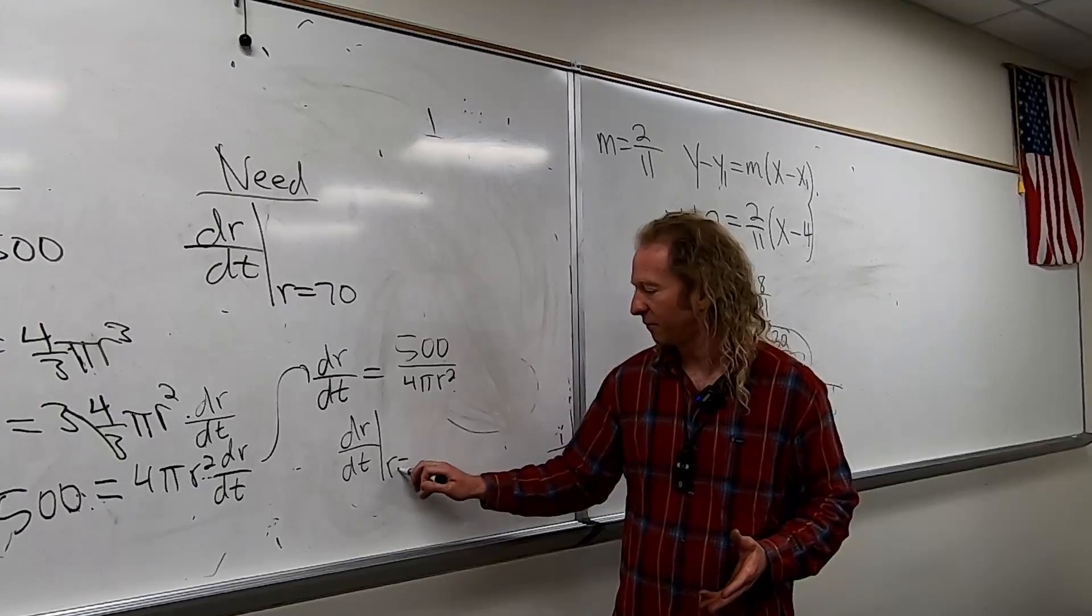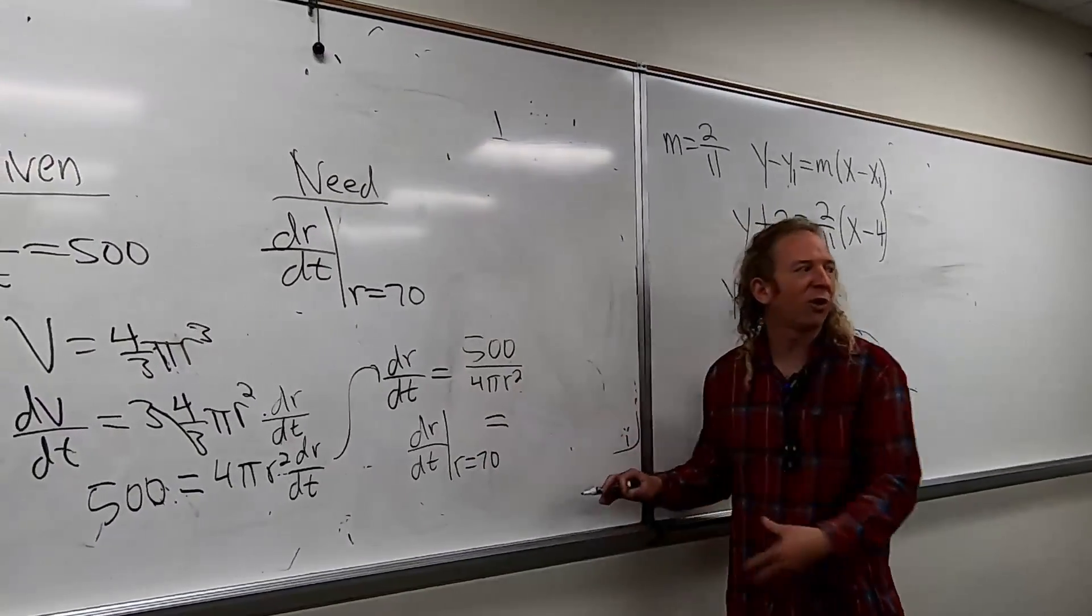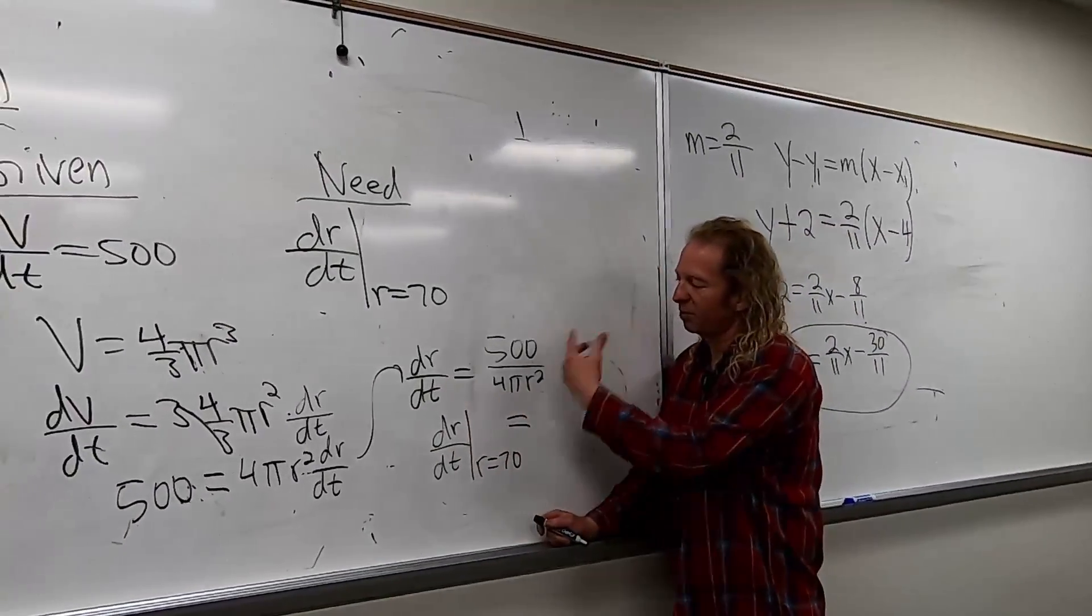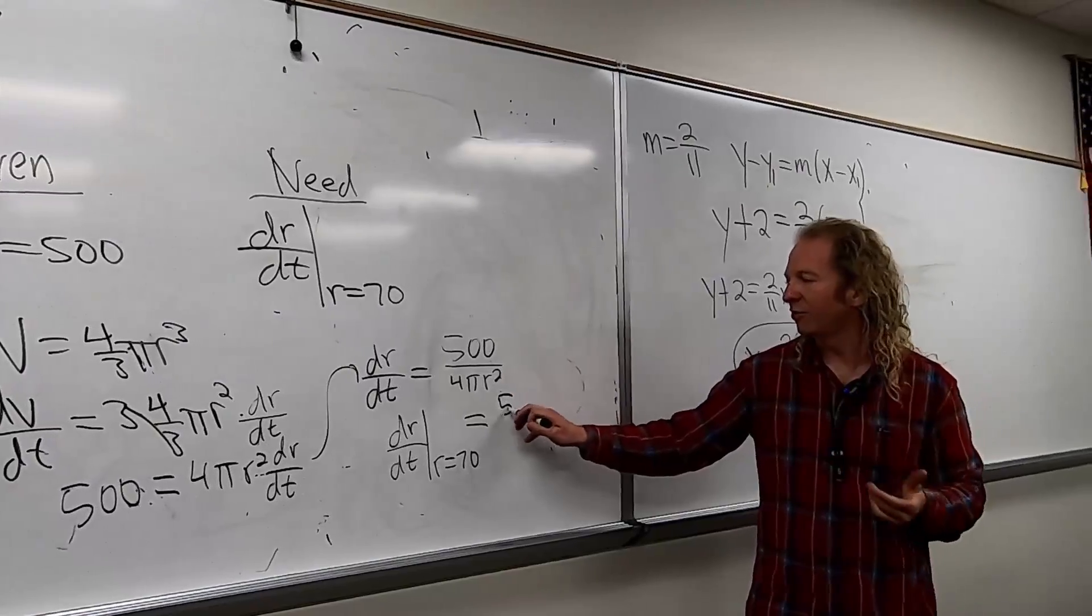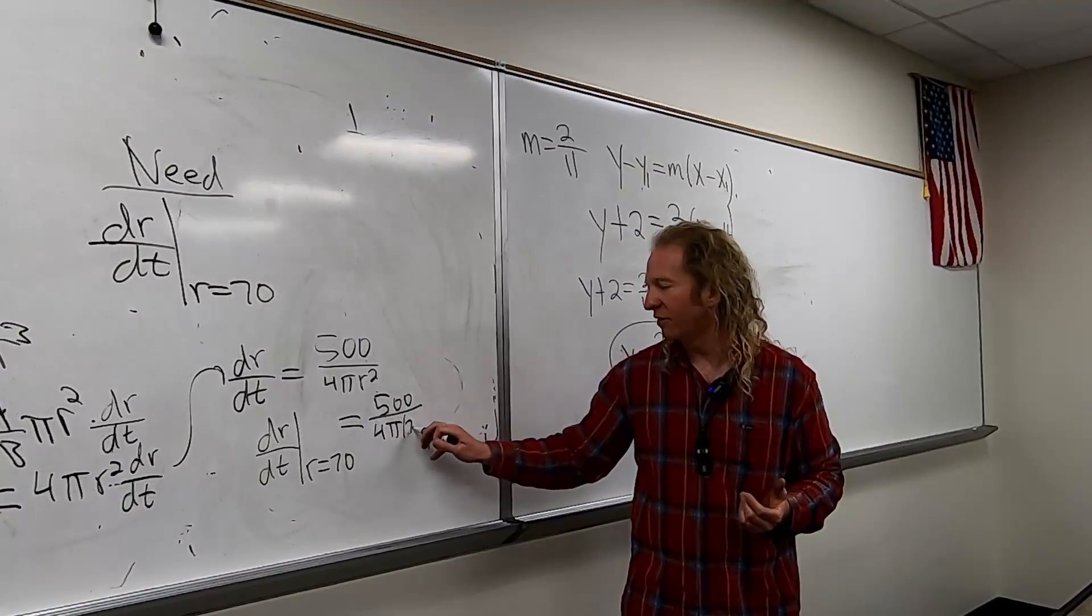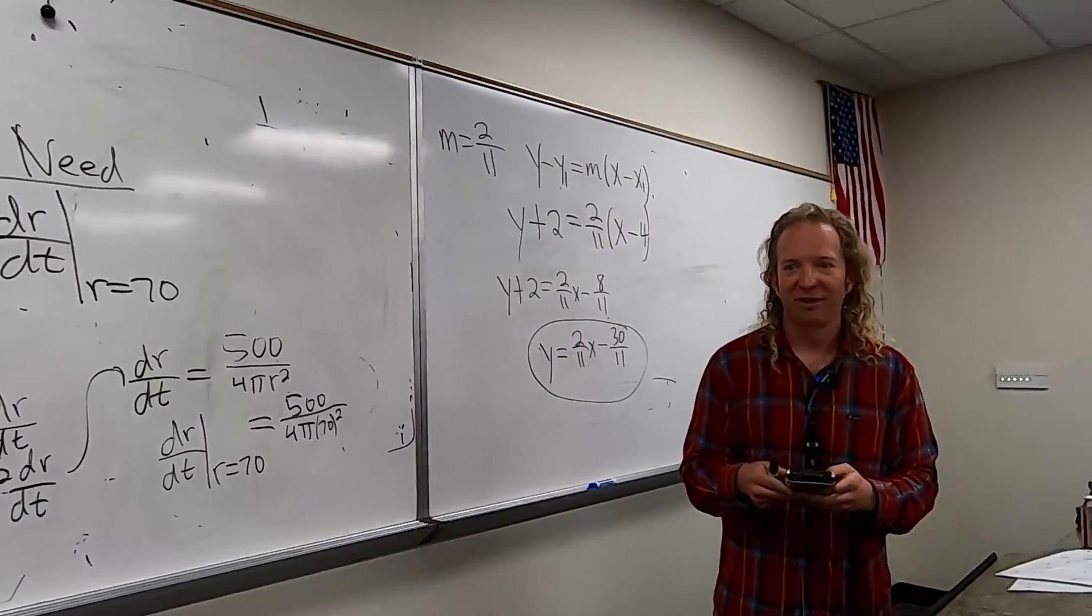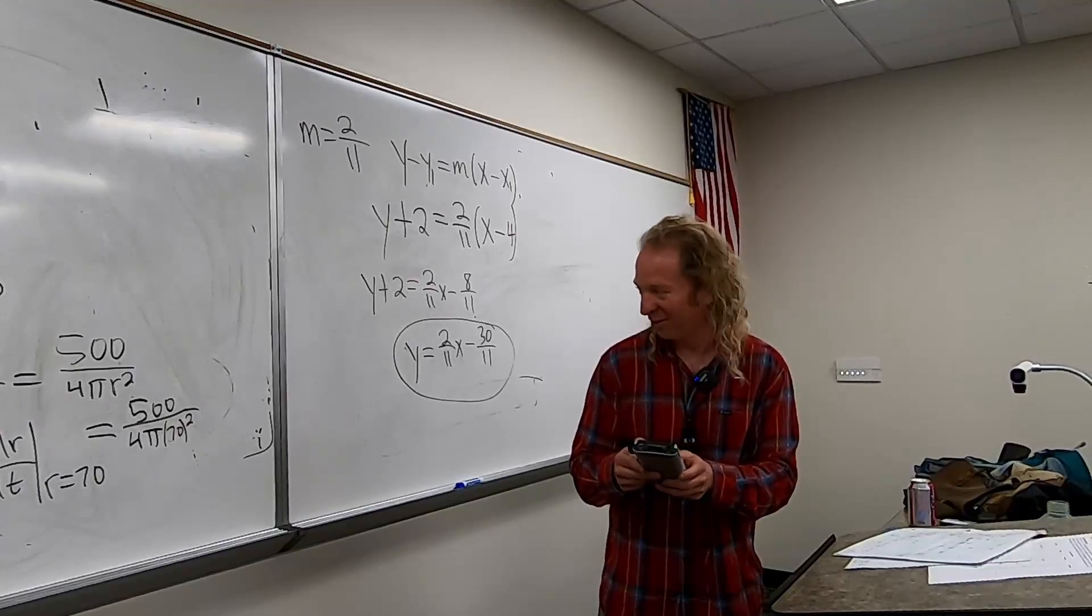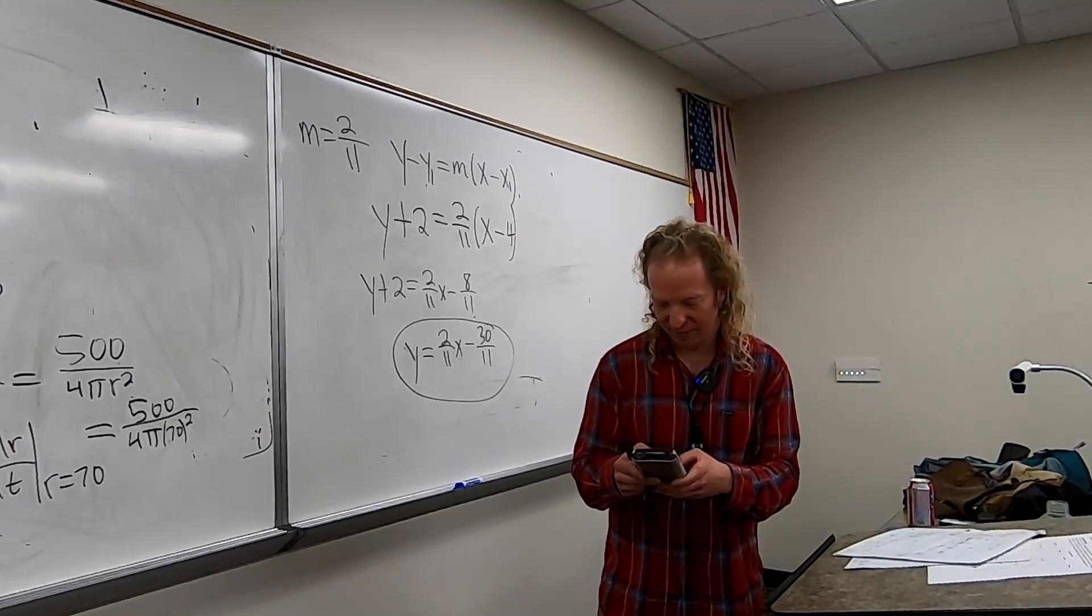So notice I didn't plug it in over here. Because I wanted to wait to the very end so I could use that notation so I can show you. So now at the very end, you do this. Then you do this. It's really important, this notation here. Otherwise, it's wrong. If you don't tell the reader you're plugging it in and just plug it in, it's a little bit sloppy. So this is 500, 4 pi, 70 squared. And thankfully, we have calculators.